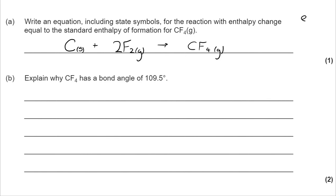Moving on to part B, why does CF₄ have a bond angle of 109.5 degrees? You've got to remember all of the names of the shapes and the bond angles. This question is asking in a slightly different way—it's telling you the bond angle is 109.5, which you are probably equating with tetrahedral, but it's asking you why.